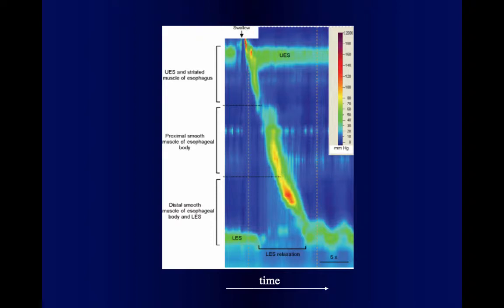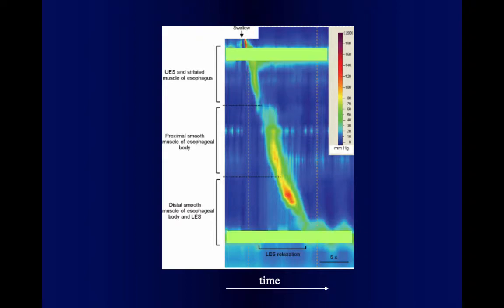This is what is called a spatiotemporal map — an example of measurement in the esophagus. Although it looks complicated, it's a two-dimensional representation of what is happening. Time moves from left to right and the esophagus is shown from top to bottom. Pressure is color-coded: dark blue means nothing is happening, close to zero; as pressure increases it goes to green, yellow, and red.